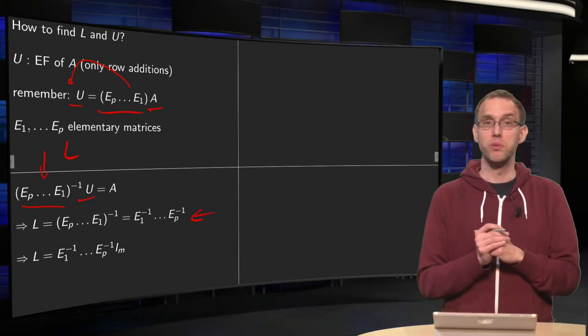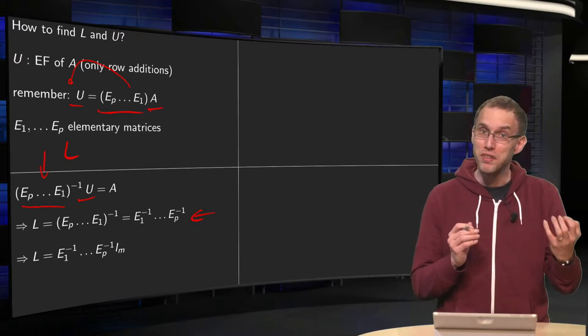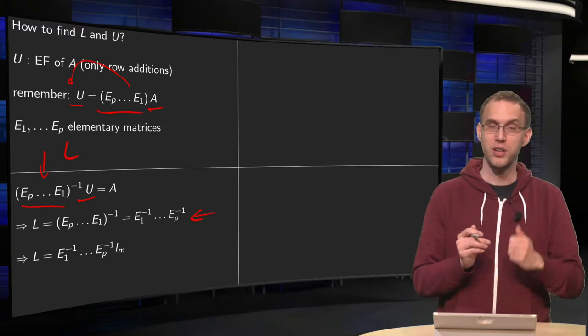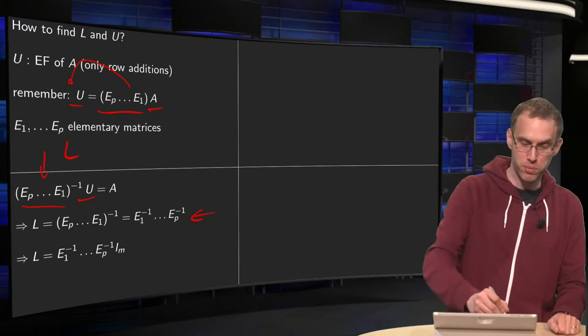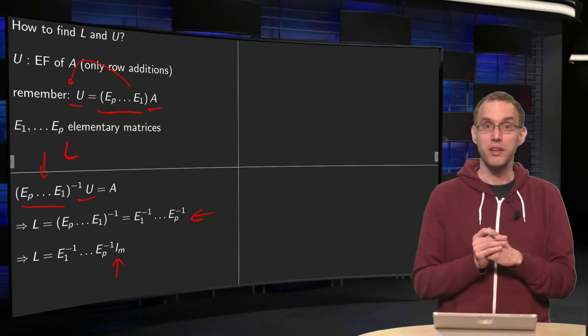Now you know how to compute your L. But this is really inefficient, and we want to find an efficient algorithm. So, we have to do something a bit smarter. First, we put an identity matrix over here. And now you see how you can find L.